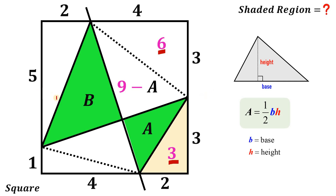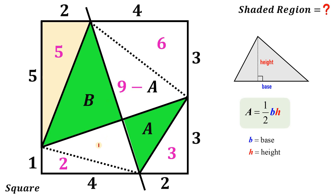Next, we will do the same thing on the other half of the square. Let's find the area of the right triangle at the bottom part — this is 2 square units. And this other triangle is 2 times 5 divided by 2, or simply 5 square units. We have 5 and 2, a total of 7, and we know the total area of this half is 18 square units. So this white triangle is just 11 minus B square units.